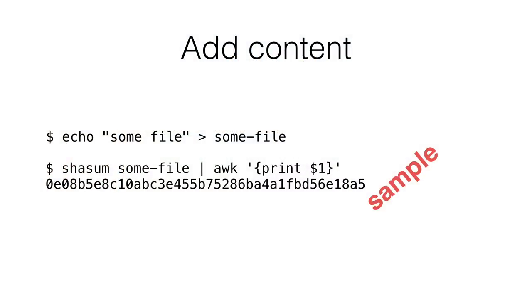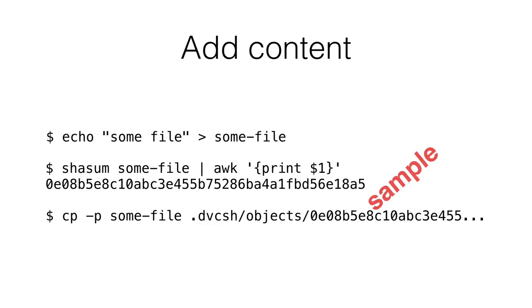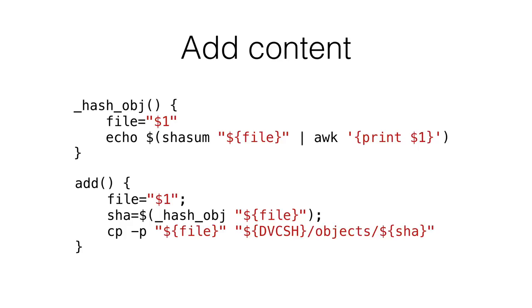Naming by hash has an interesting side effect: if the file were corrupted or tampered with, we could immediately know it. We could take the object as it exists in the objects directory, compare its hash with its own name, and if they don't match, we know the file has been corrupted or tampered with. So there are nice security side effects of doing it this way. We would SHA-sum some-file to get the hash out of it, then copy our file into the objects directory. We're going to introduce two more functions: _hash_object, which takes a file and hashes it returning its hash; and add, which is equivalent to git add.